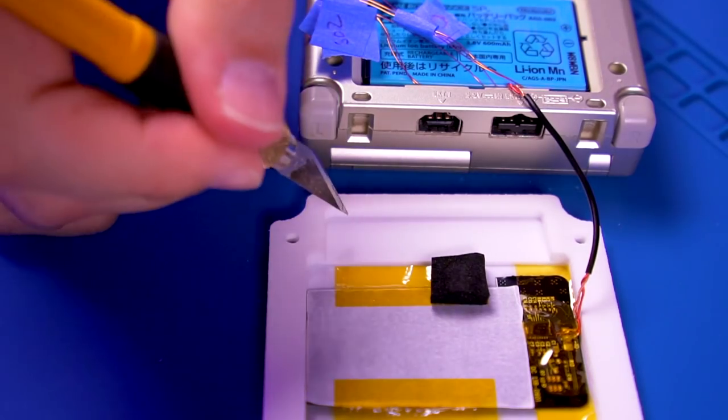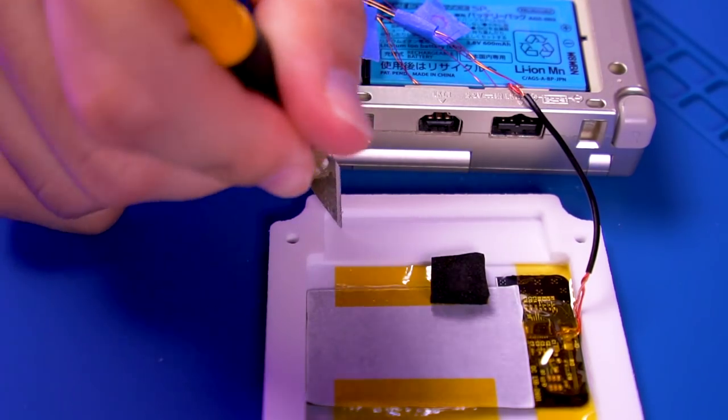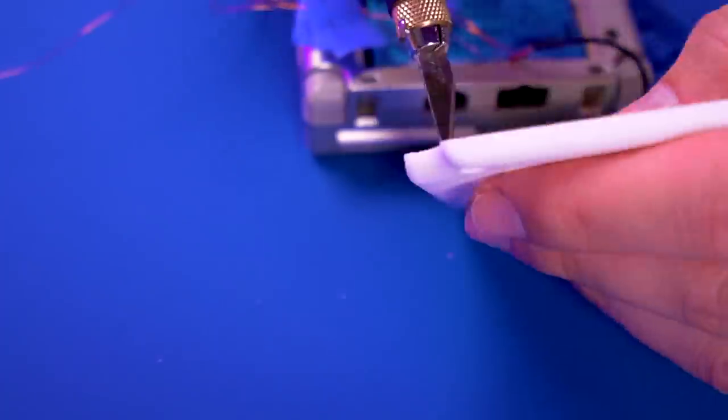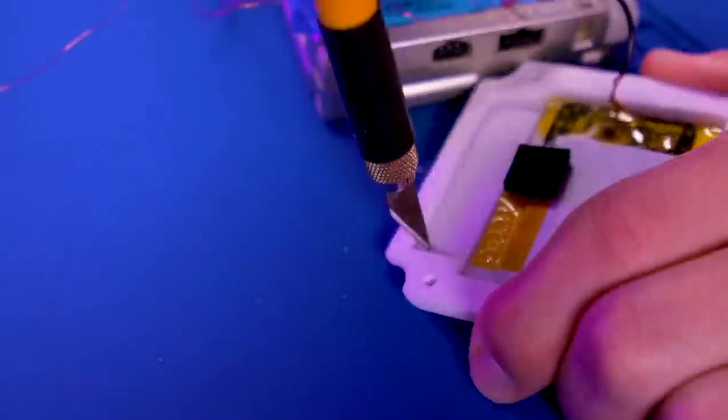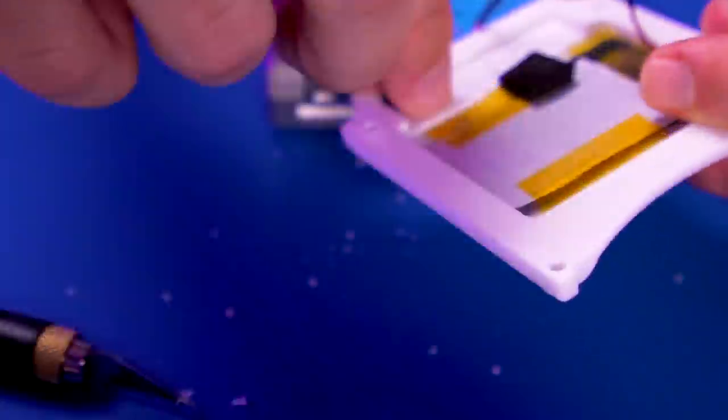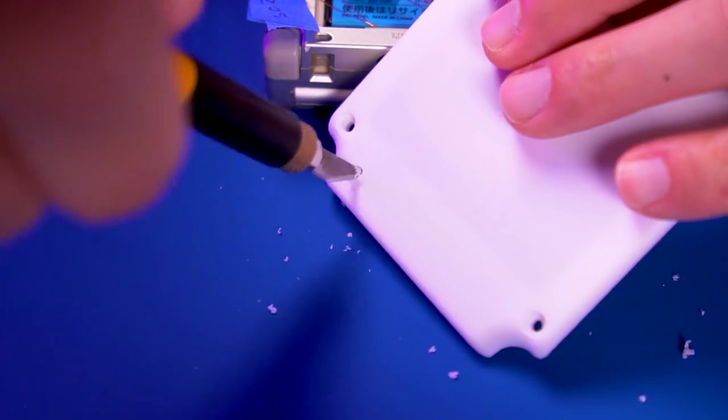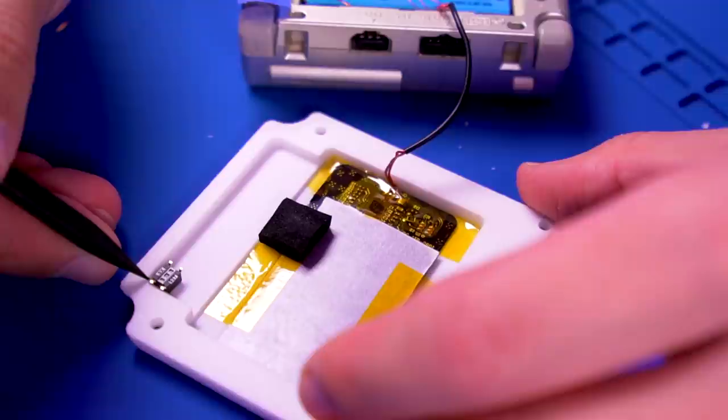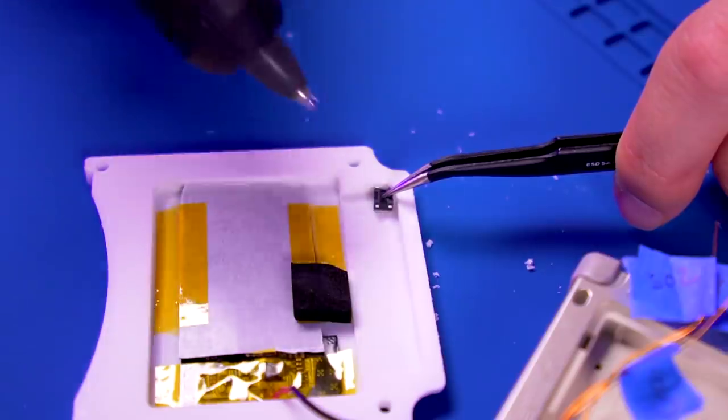Next, make a small hole for the momentary switch. I'll be using my craft knife to accomplish this. Once the hole is large enough, go ahead and position the switch in place, then use some hot glue to secure it.